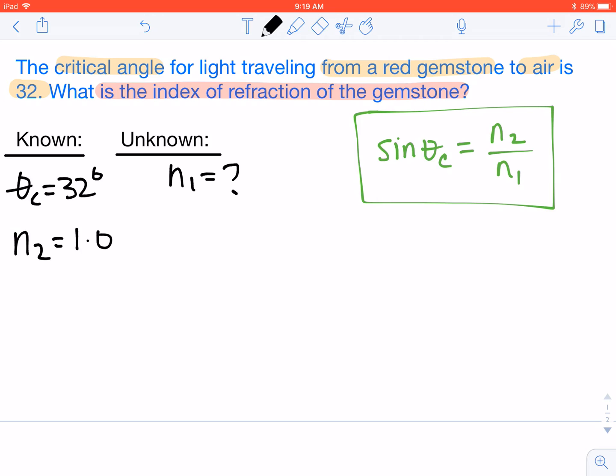In this case, as we start plugging these values into the exact same equation, we're going to end up with sine of 32 degrees equals 1.0 divided by N1. We'll find what the sine of 32 degrees is. In this case, it's 0.53 equals 1.0 over N1.